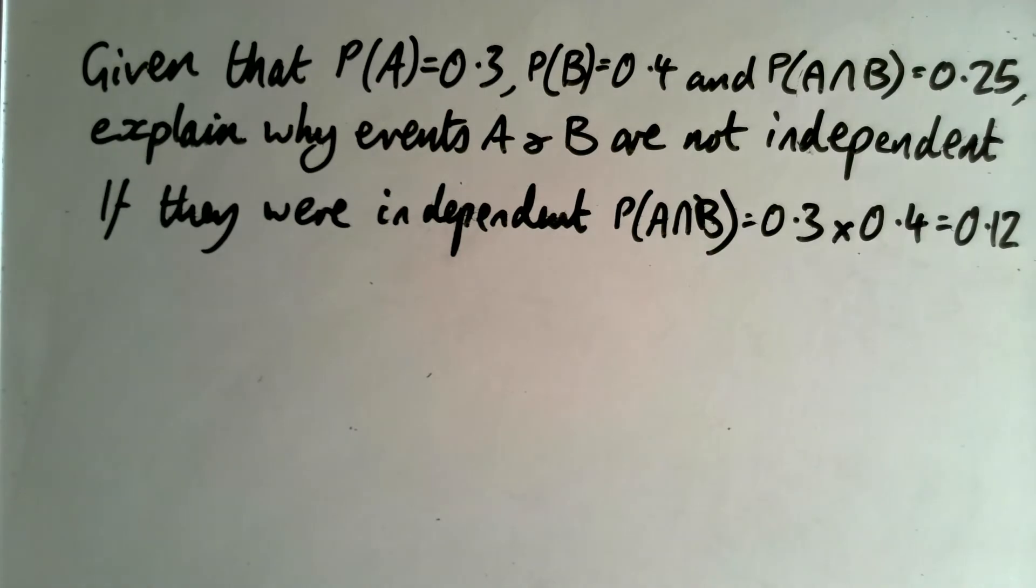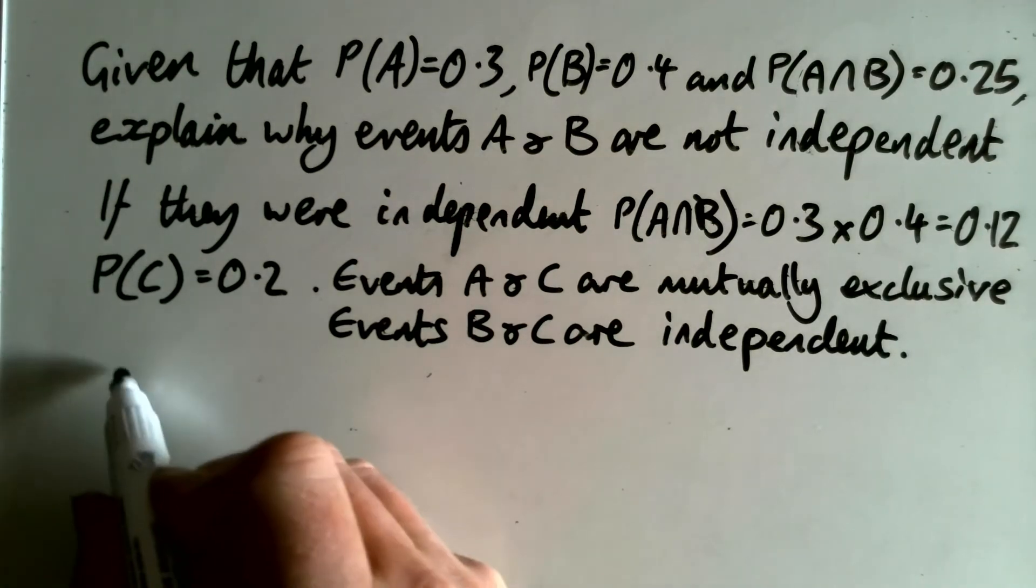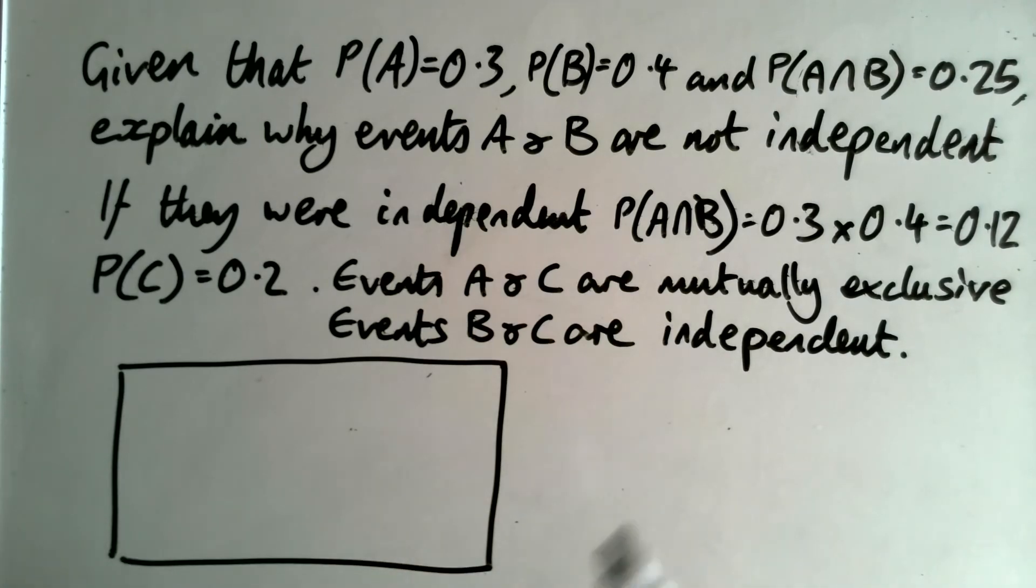Now, what happens if we throw a third event into the mix, which is mutually exclusive of one of the others? That means it can't happen at the same time. Right, so we've got this third event, probability of event C. The probability of event C happening is 0.2. And we're being told that A and C are mutually exclusive. That means they can't happen at the same time. But B and C are independent. Now, your next challenge is to draw a Venn diagram that sums all of this up. So pause the video and have a go.